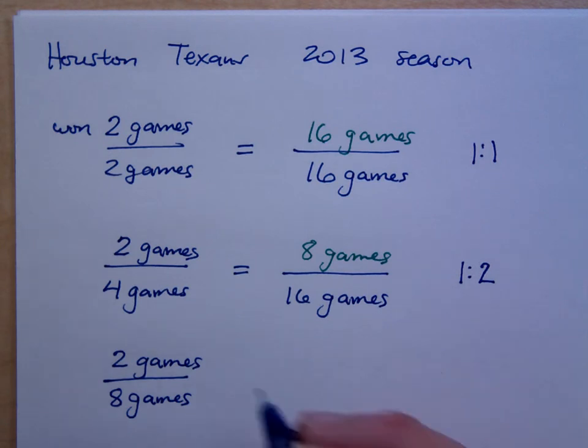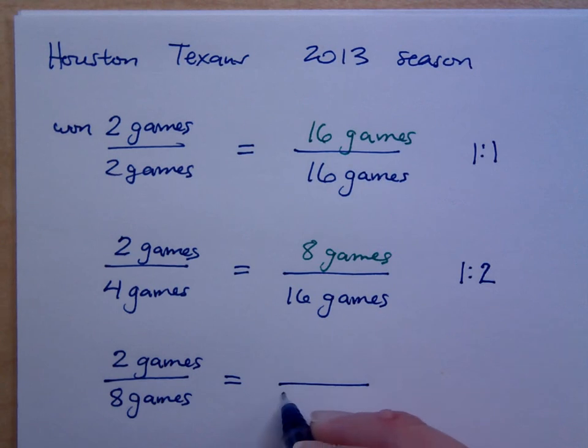What the fill in the expletive? So, they won the first two, and then they lost the next six. So, if we go to 16 games, how would you make this a proportion? What would that answer be?